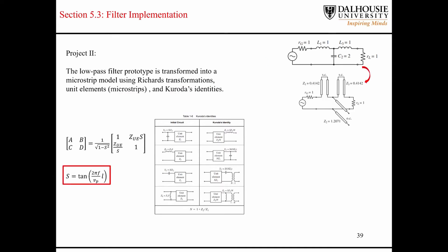So the first thing we do in order to convert the lumped components into microstrip lines, we use the Richards transformation. We convert the inductors into short-circuited series transmission lines. And then the capacitors are converted into open-circuit stubs.